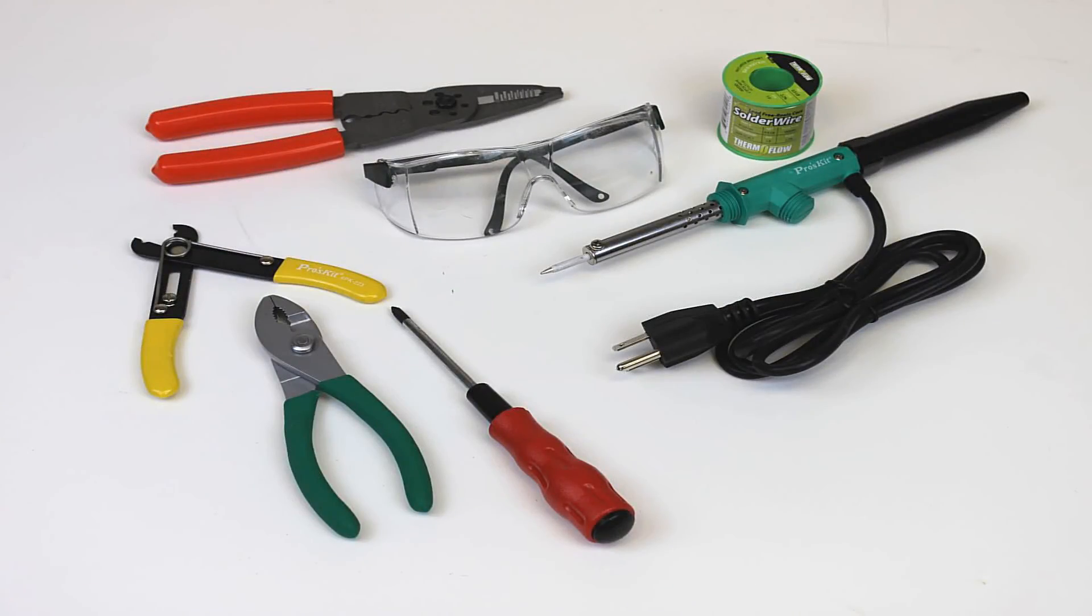For this kit you will need a multi-purpose crimping tool, a pair of safety glasses, some pliers, a number one phillips head screwdriver, a soldering pencil with some lead free solder, and wire strippers are optional.